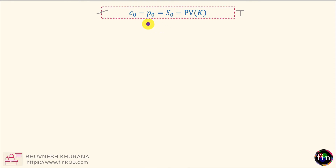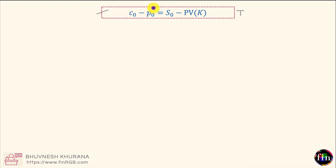Let's understand the reason why this relationship holds, because that will help us derive the put-call forward parity as well. The left-hand side can be thought of as a portfolio containing a long position in one European call coupled with a short position in one European put. The right-hand side is also a portfolio containing a long position in one unit of the underlying asset, coupled with a short position in a zero-coupon bond with face value K and maturity T years from today.